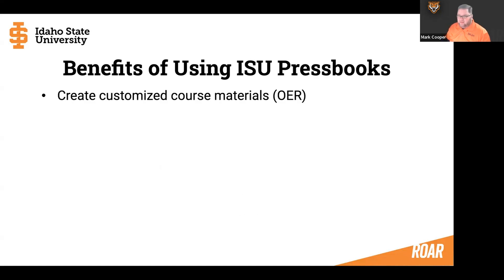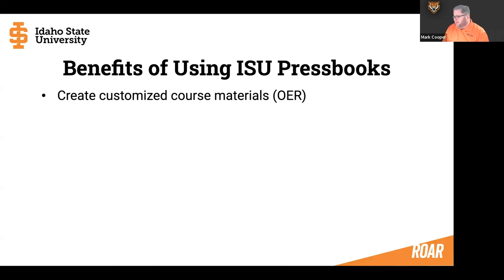One of the benefits is you can create customized course materials and Open Educational Resources. This allows you to create not only textbooks — and I think that's a big misconception, people think it means they have to create a textbook — but you don't. You can create a rubric, an instructional material that you use in your course. It doesn't have to be a textbook. It allows you to create custom content and tailor that to specific curriculum in your course. Open Educational Resources provides students with free or low-cost learning materials, and so you can create that for them.